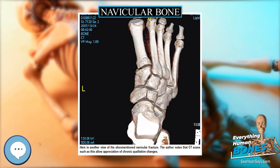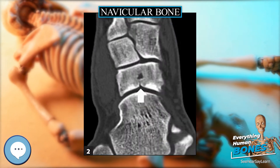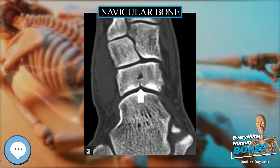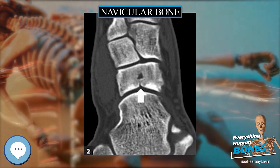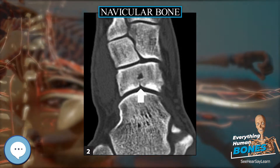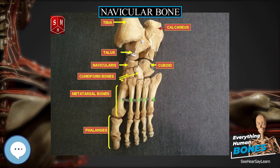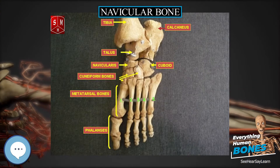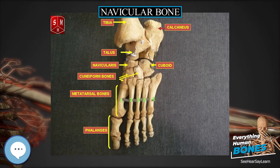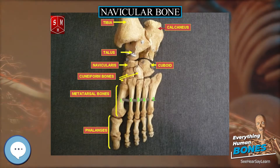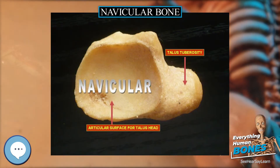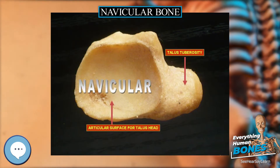The navicular bone is a keystone of the foot. It is part of the coxa pedis and articulates with the talus, first, second, and third cuneiform, cuboid, and calcaneus. It plays an important role in the biomechanics of the foot, helping in inversion, eversion, and also motion.